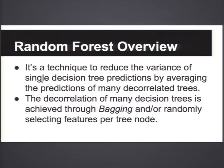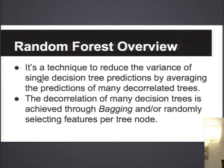First I'll go over an overview of random forests. How many people here know about random forests? The basic idea is that if you have predictions from many decision trees, and each of the decision trees is somewhat de-correlated with each other, then the average of the predictions does much better than a prediction from a single decision tree. It's kind of like reducing the variance of prediction.